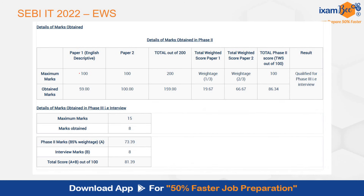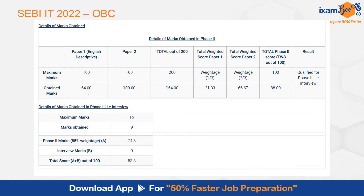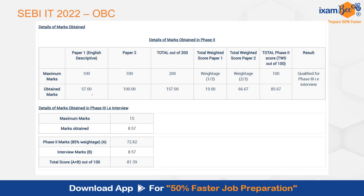This is the mark sheet of an EWS candidate who scored 59 in Descriptive English. Coding is 100 out of 100 — all candidates are expected to score full marks in coding. The phase 2 score was 86.34, the student got only 8 marks in the interview, and the overall score was 81.39, which matched the EWS category cutoff. For OBC category: one student got 64 in Descriptive English, 100 in coding, total 88 weighted marks, 9 in interview, overall 83.8. Another OBC candidate scored 57 in paper 1, 100 in paper 2, and 8.57 in the interview.